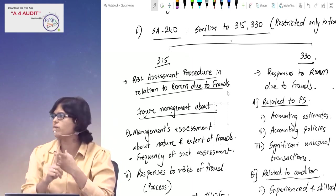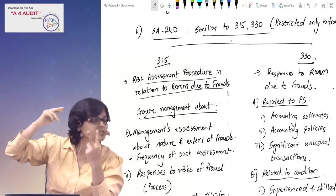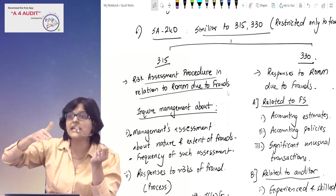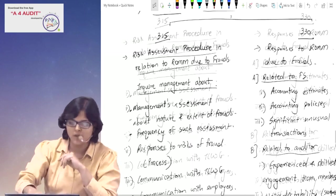Then auditor related - three points. Which three points? Experienced staff. Second point: surprise check, NTE of audit procedure. And third: cut-off procedures.